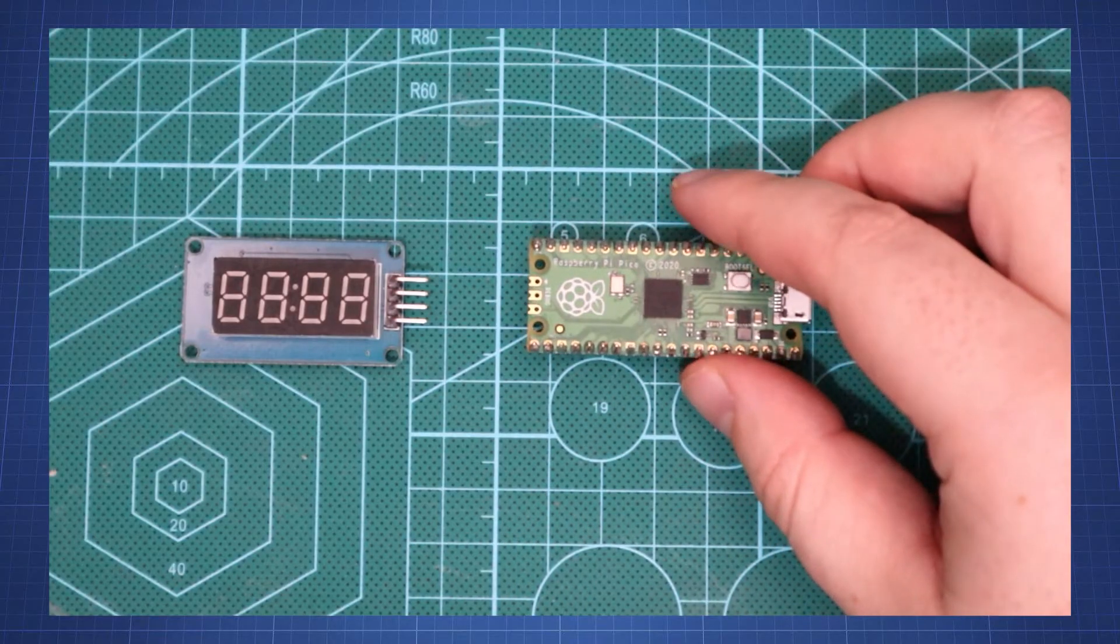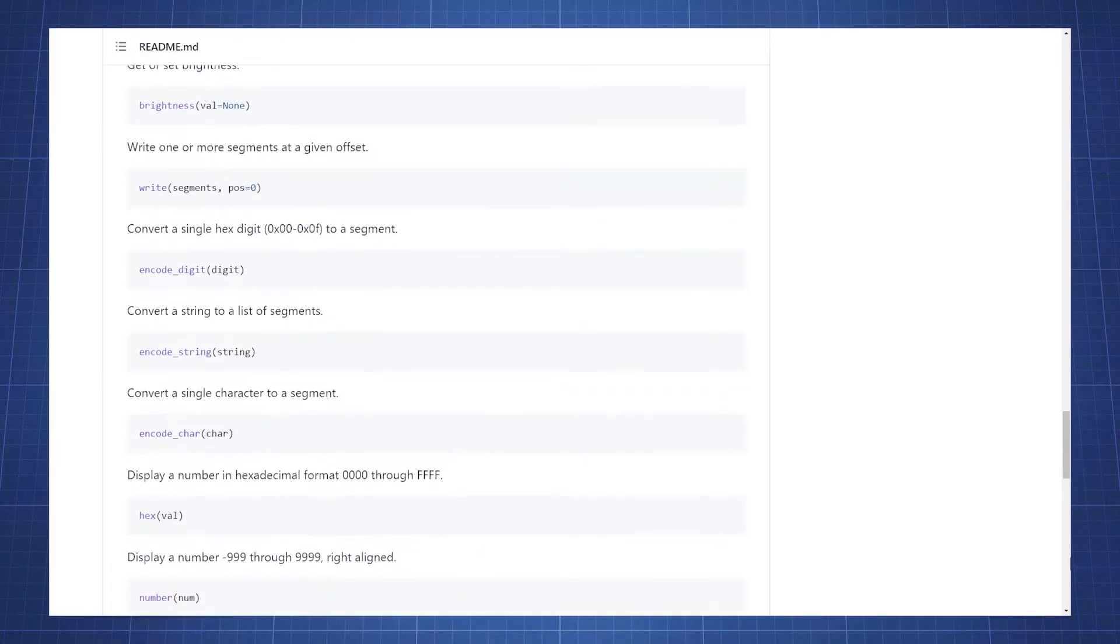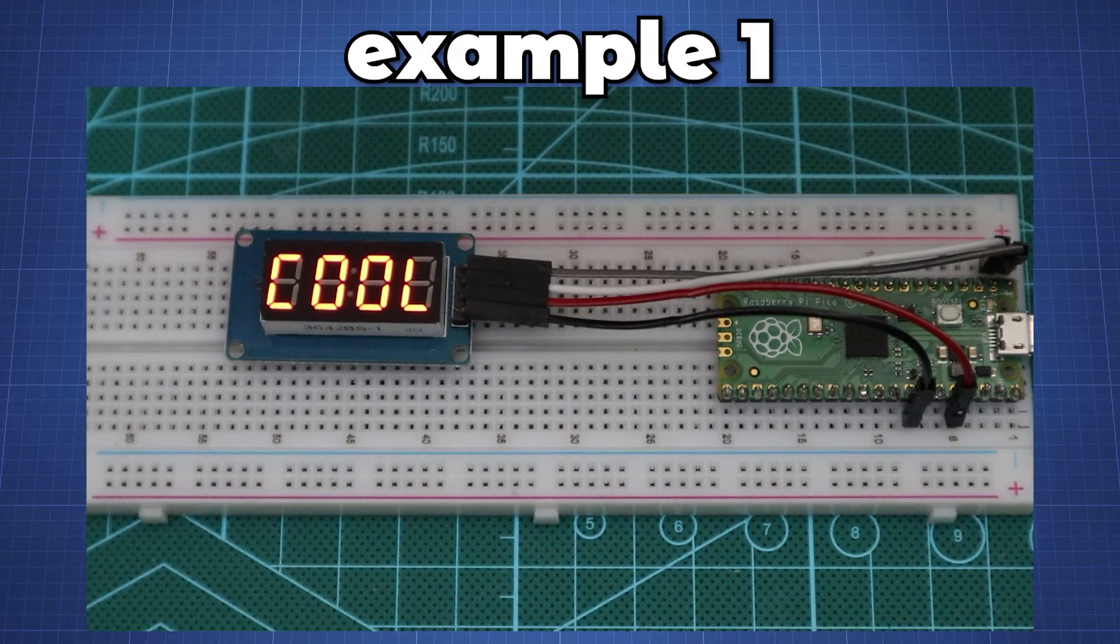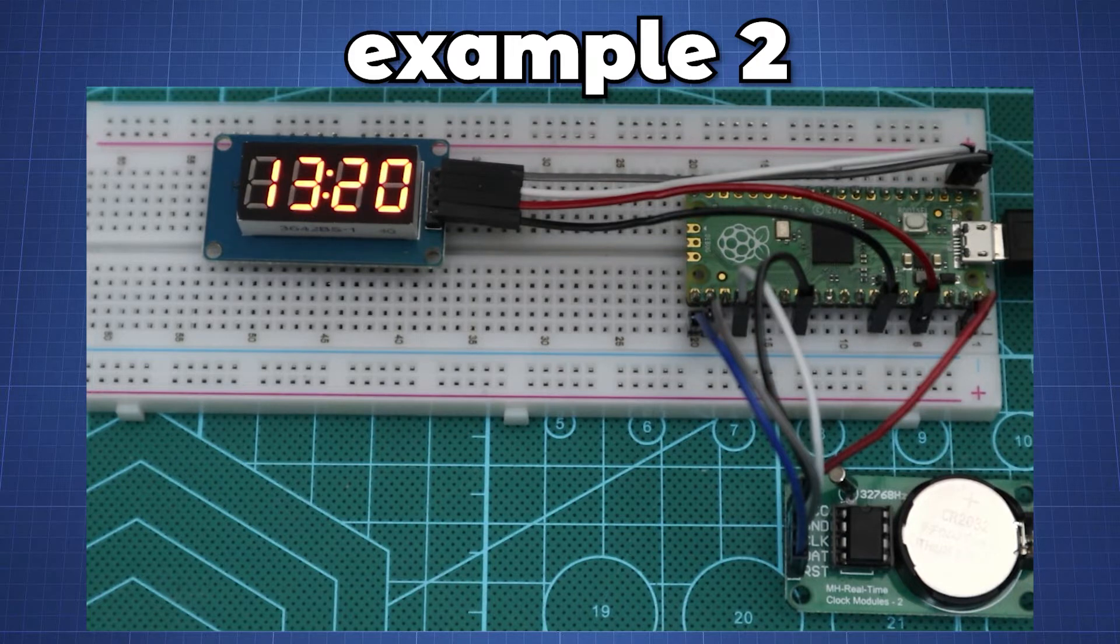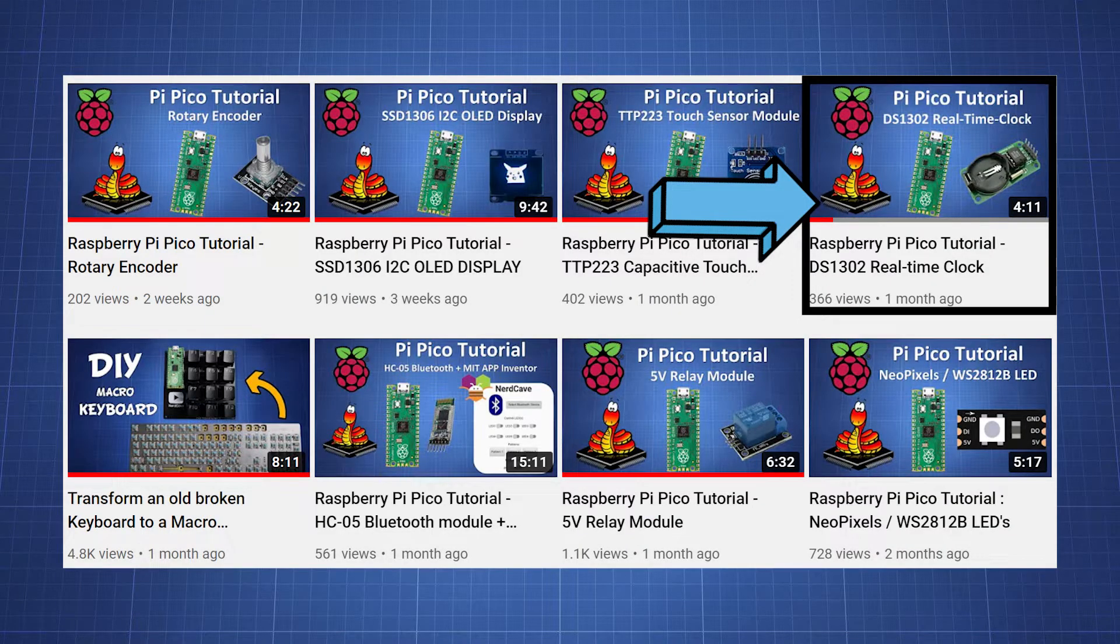We will connect it to the Raspberry Pi Pico and look at a library to control the display. In the first example we will look at how to show words, scrolling text or numbers, and in the second example we will use it to display the time using the famous DS1302 clock module which we covered in a previous video on this channel.